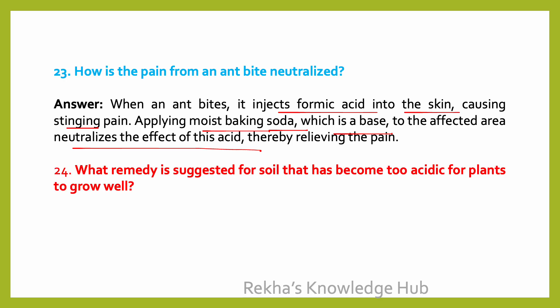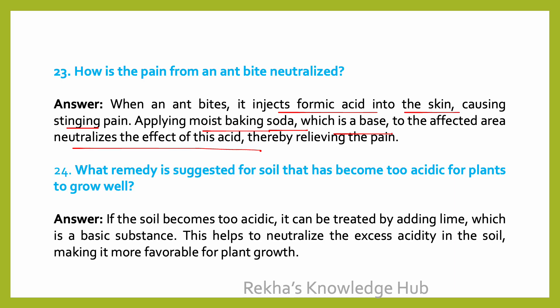What remedy is suggested for soil that has become too acidic for plants to grow well? If the soil becomes too acidic, it can be treated by adding lime, which is a basic substance. This helps to neutralize the excess acidity in the soil, making it more favorable for plant growth.